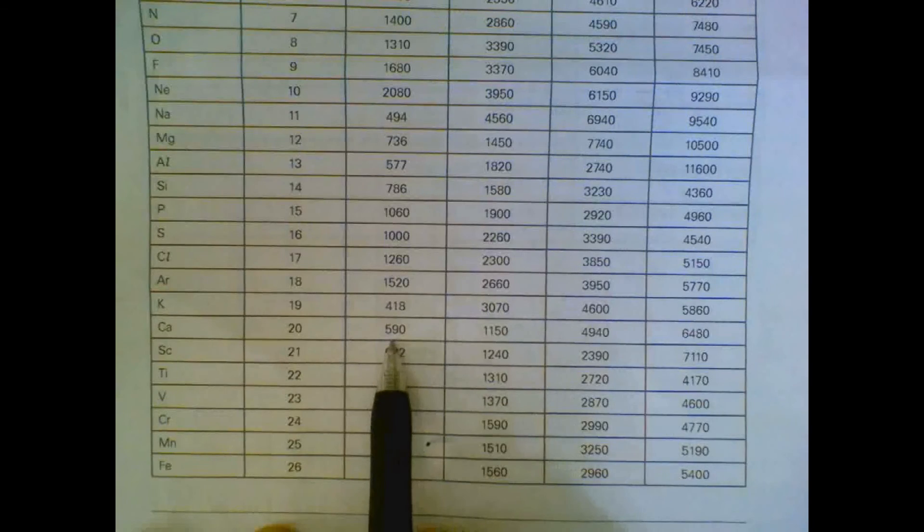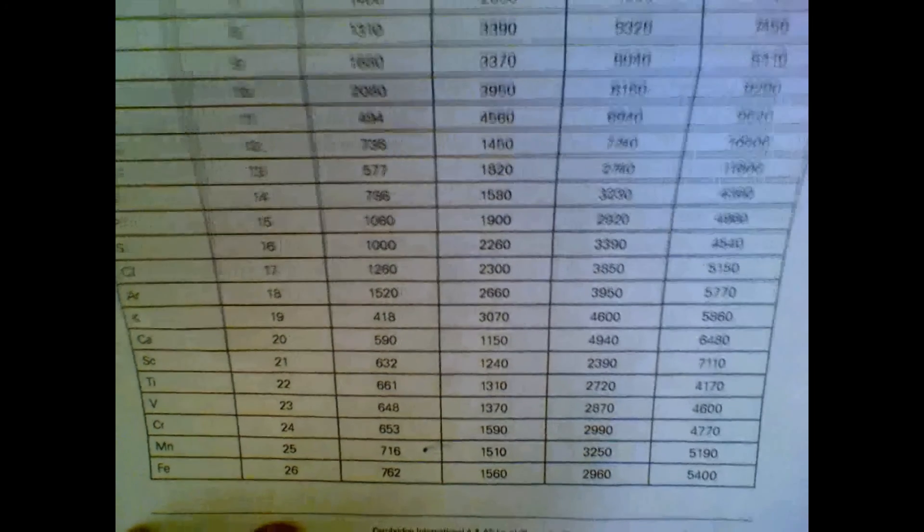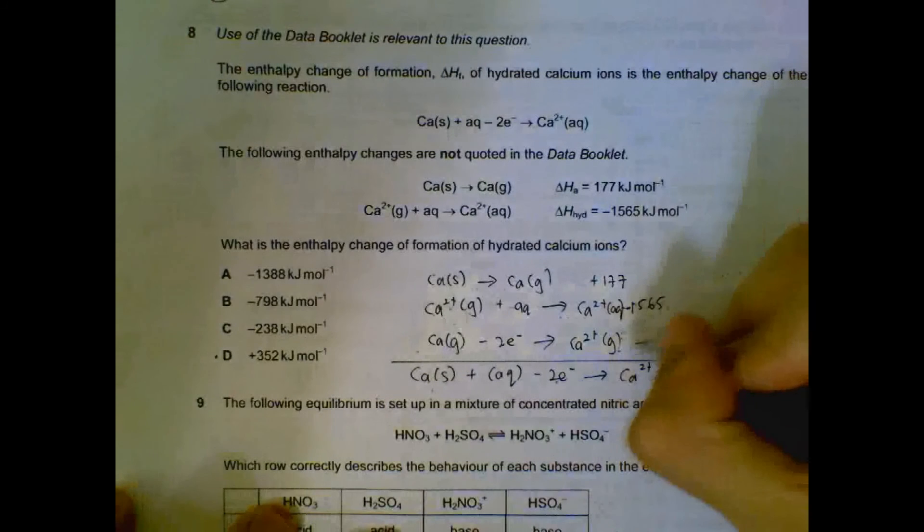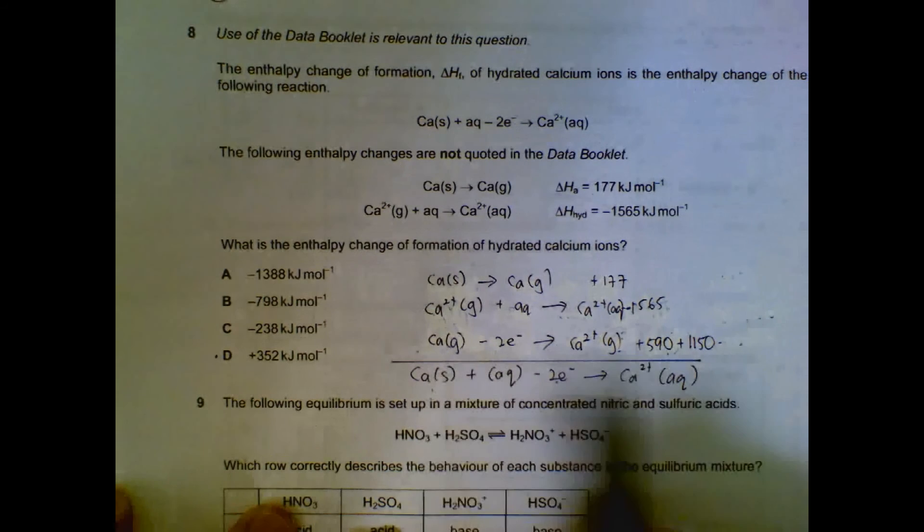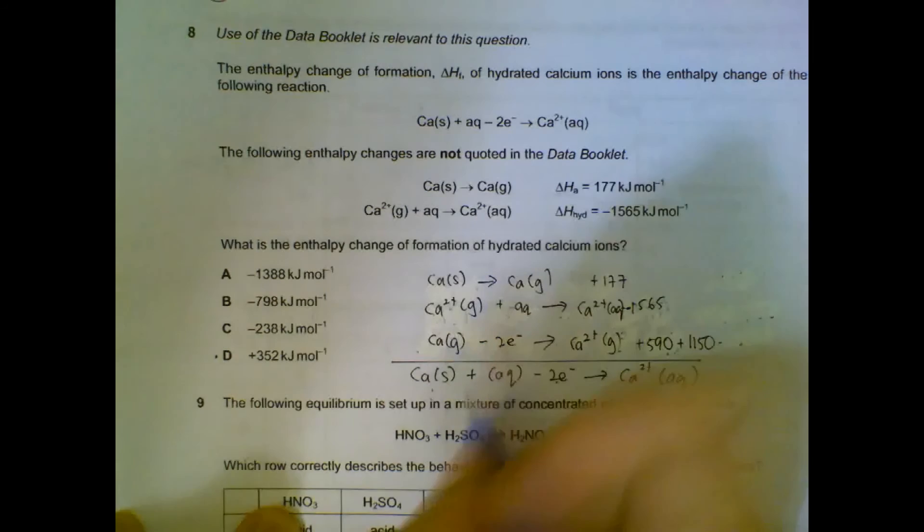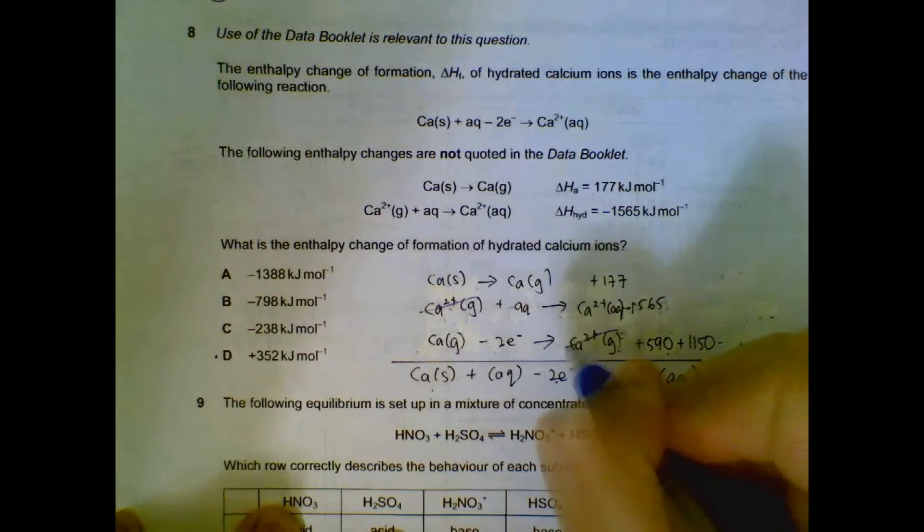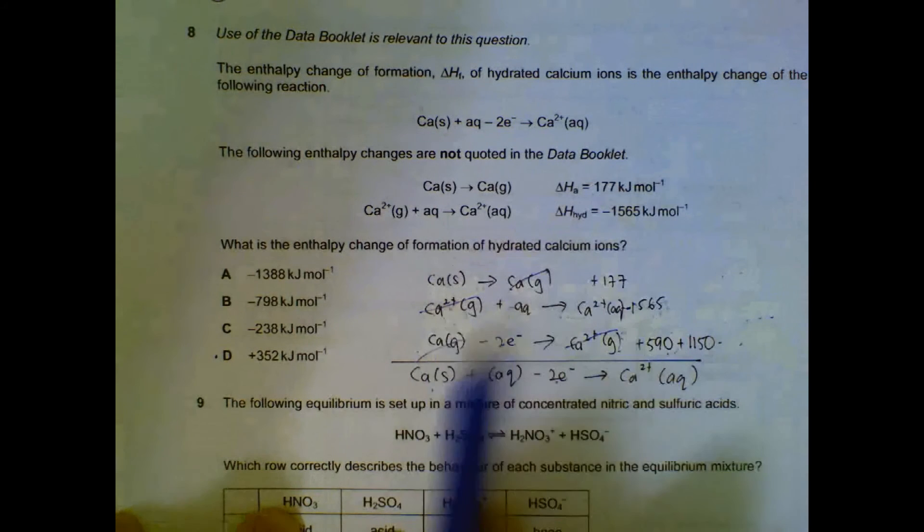Remove an electron, the first one we require 590, the second one we require 1150, so we sum them up. Endothermic reaction, so plus 590 plus 1150. It's endothermic in this direction, we're removing an electron. We can double check that our overall equation is correct: Ca2+ cancels out, and then our Ca gas cancels out, giving us our overall equation.